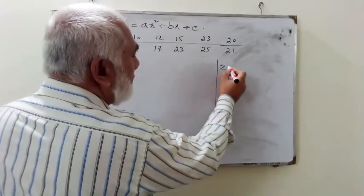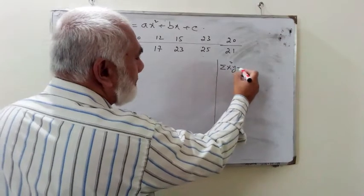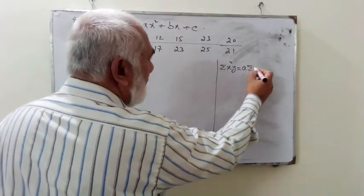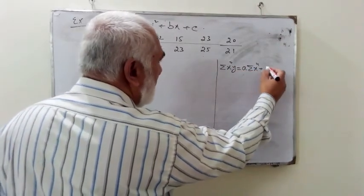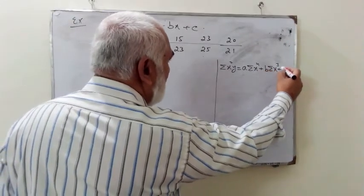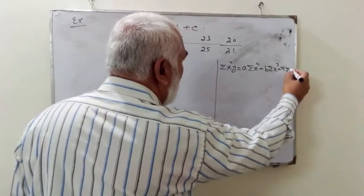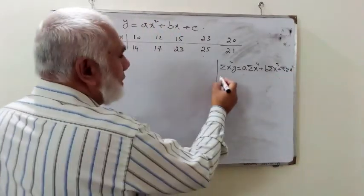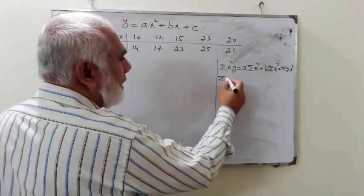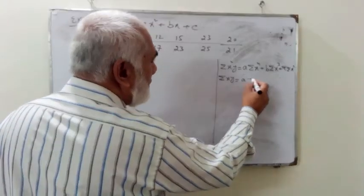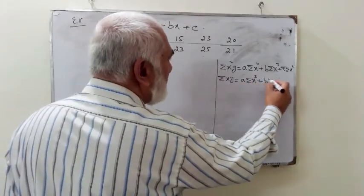But here we are given a real situation in which a set of points are given, so we have to make use of these points as well. In order to apply the normal equations, let me write down on the left side all these three equations we have constructed for the parabolic case. So these were Σx²y equals a Σx⁴, b Σx³, and c Σx².